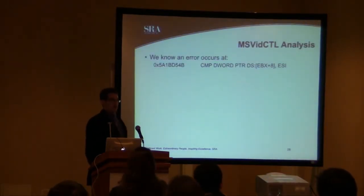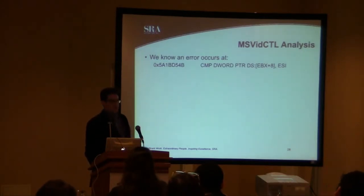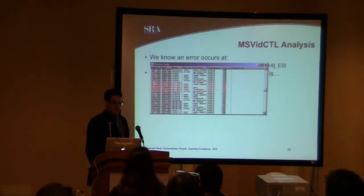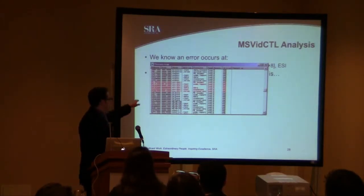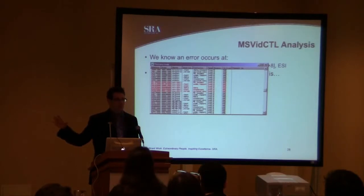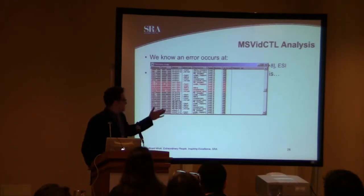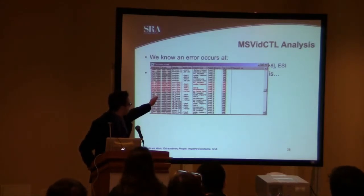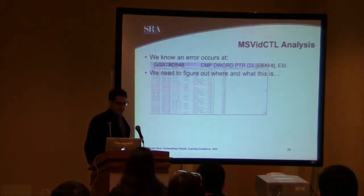At this point we know that an error occurs at this memory address, and we know the instructions that occurred at that memory address. So we need to figure out where and what this is. Looking at the memory map of just that address space, we see that there's a MSVidCTL.DLL that's loaded. In OllyDbg there's an M button — you hit M and it opens up the memory map, showing you everything mapped in memory. In this case it's MSVidCTL, and you can see it's an executable with code, imports, data, resources — all of that stuff. So likely something we can jump into.